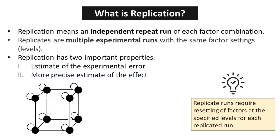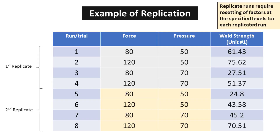Replicate runs require resetting of factors at the specified levels for each replicated run. This is a crucial aspect of our experiment that ensures the accuracy and reliability of our results. Replication provides an efficient way of increasing the precision of an experiment; the precision increases with the increase in the number of observations.